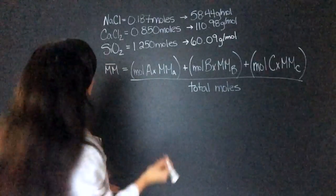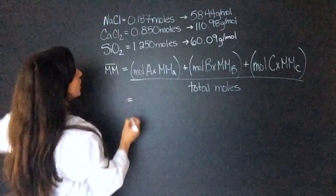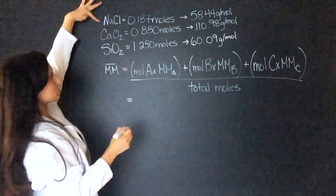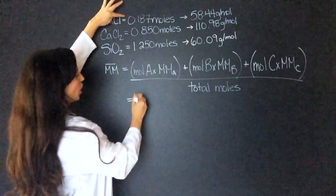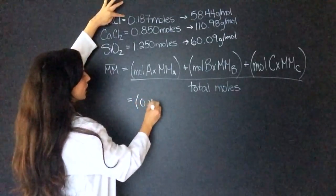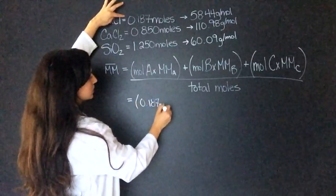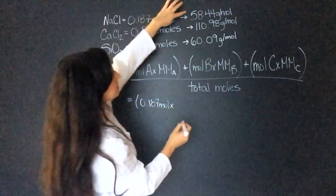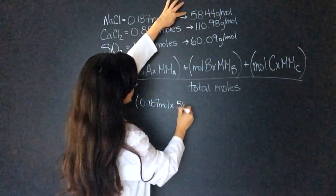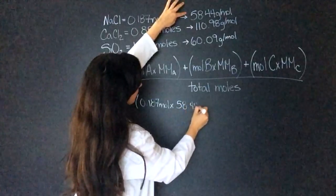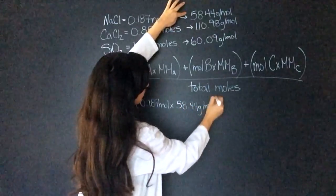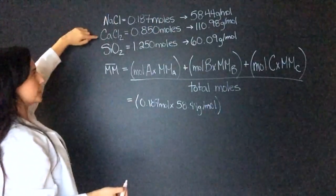All right, we can start plugging it in. So we're going to have the moles of A, so we'll use sodium chloride as A, 0.187 moles times 58.44 grams per mole plus B, which is calcium chloride.